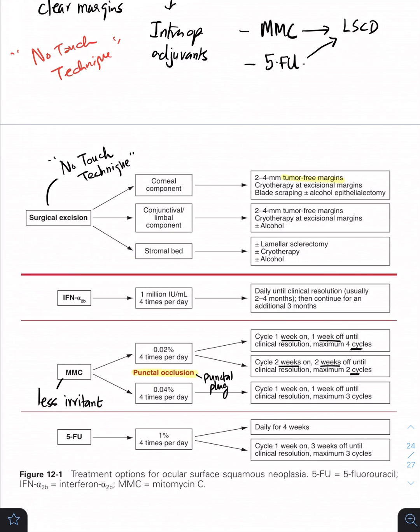This is a very important table from AAO. Please pause the video and take a screenshot of this table, very important table. This table clearly shows we have the surgical excision, you have three important topical chemotherapy agents. Surgical excision depends upon where the tumor is involved: it's going to be corneal or conjunctival or limbal or it's going to be stromal bed. Depending upon where it is involved, you have to go for the specific treatment.